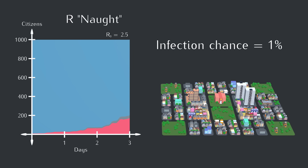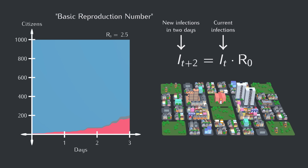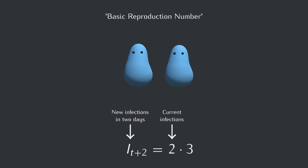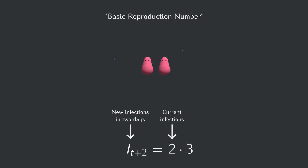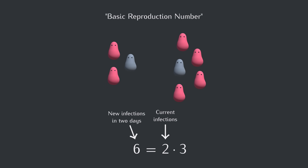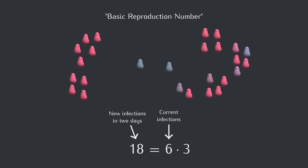This R0 number is called the basic reproduction number. It's the number of new infections caused by each infectious blob before it recovers, on average, assuming there's no immunity. For example, if R0 equals 3 and we start with two infectious blobs, each would infect three more blobs on average and stop being infectious itself. So the new number of infectious blobs would multiply by three, getting to six total. And this multiplication repeats, leading to exponential growth.